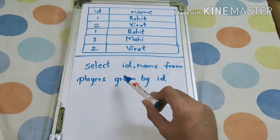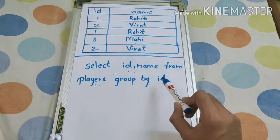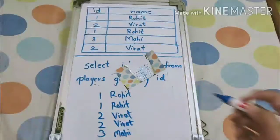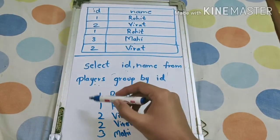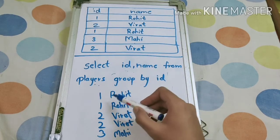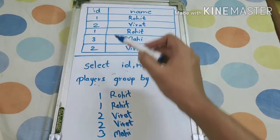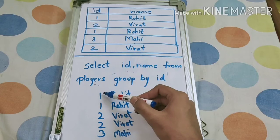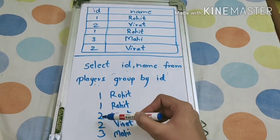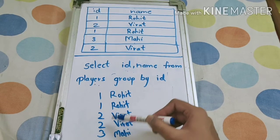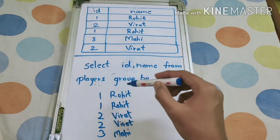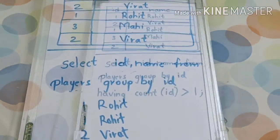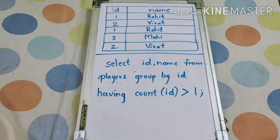What GROUP BY id will result in: it will group rows by the same id first — for example, 1 and 1, then 2 and 2, then 3. So we will get that grouped output up to this point in the query.